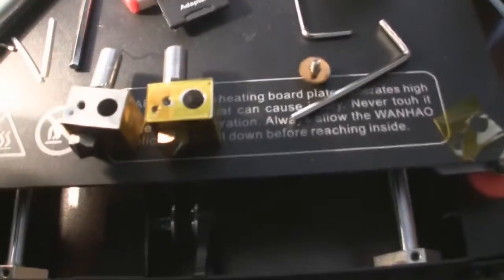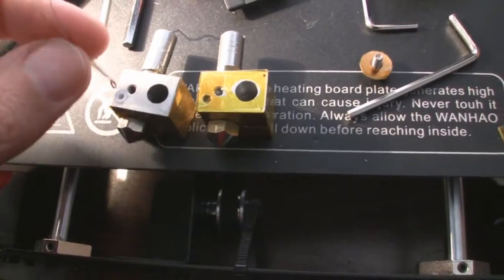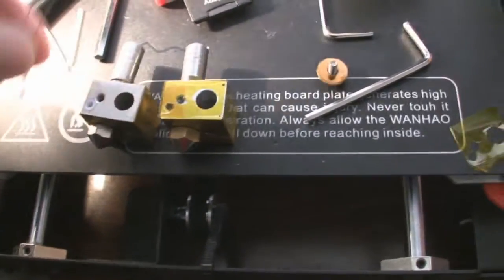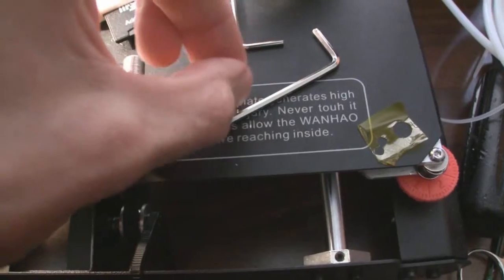This one is a Wanhao duplicator I3 and I made a video recently showing how these thermistors, when you bend them into the hole that your heating block has, and then you bend it over and secure it with a machine screw and washer, like this one.